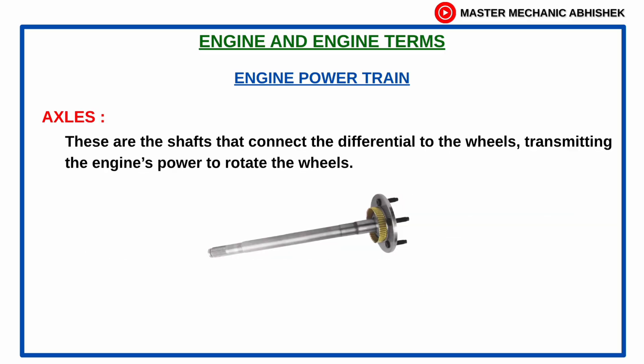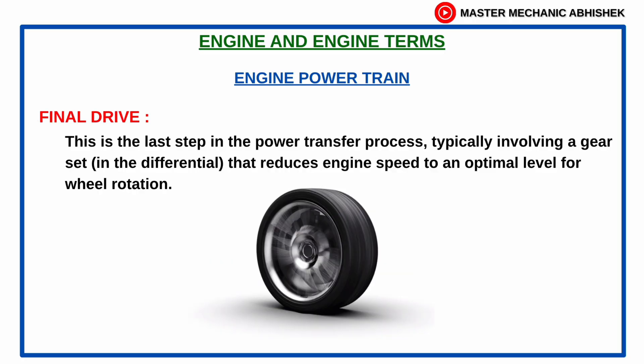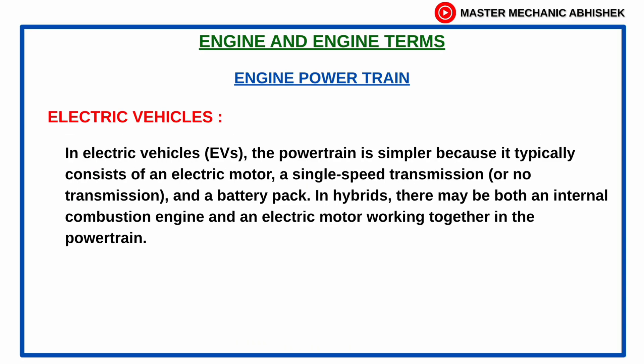Axles are the shafts that connect the differential to the wheels, transmitting the engine's power to rotate the wheels. The final drive is the last step in the power transfer process, typically involving a gear set in the differential that reduces engine speed to an optimal level for wheel rotation.